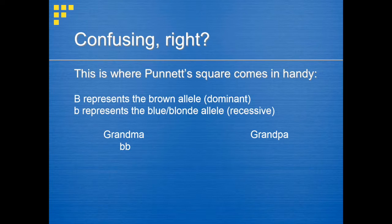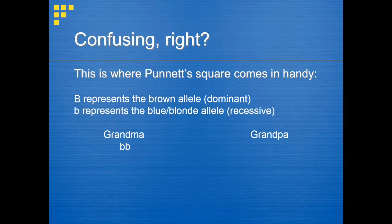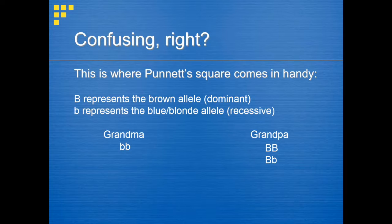Now try to answer the same questions for grandpa — remember his eyes are brown. Since grandpa has brown eyes, which are dominant, we know he must have at least one dominant allele, represented with capital B. If you said grandpa's genotype is capital B, capital B, you are correct. But if you said capital B, lowercase b, you are also correct. Either genotype represents brown eyes, so grandpa's genotype could be either homozygous or heterozygous.